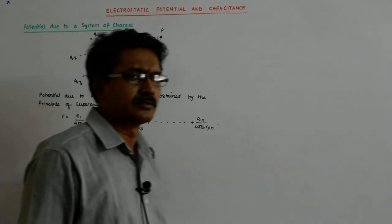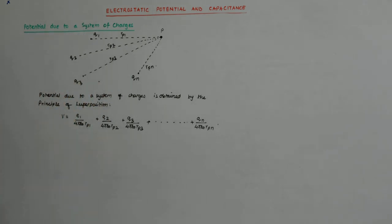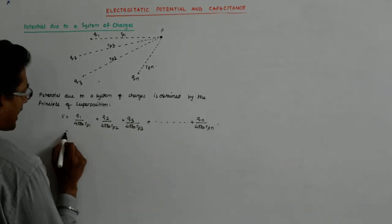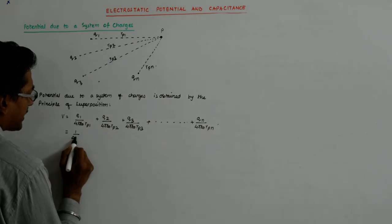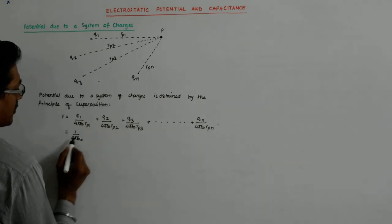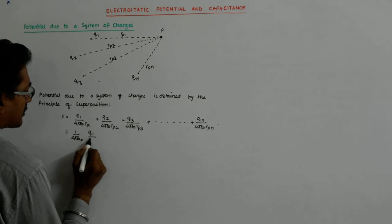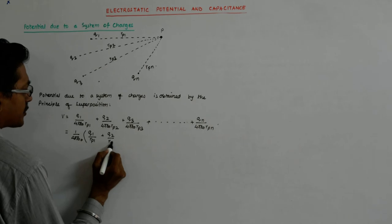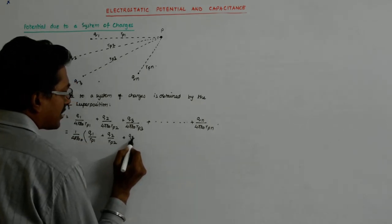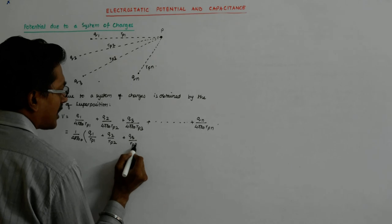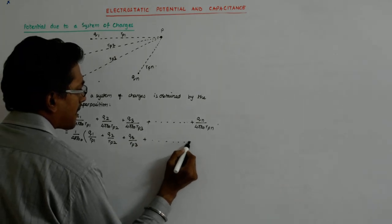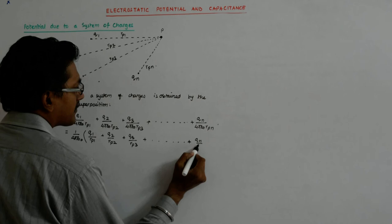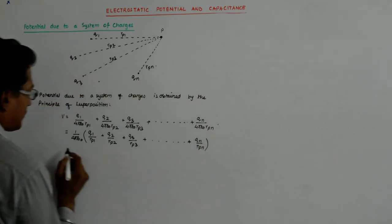Now, potential is a scalar. It is work done, and work done is a scalar. So there will not be any vector sign over this - you just have to add it up. And I can make it a bit shorter: 1 upon 4πε₀, and then q1 upon Rp1 plus q2 upon Rp2 - I have taken this as common - plus q3 upon Rp3.